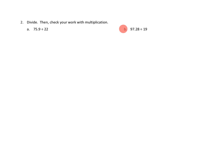So I'm going to first just set up my problem here. Our whole is going to be 97.28, and we're dividing by 19. And then over here, we'll do our check later on.